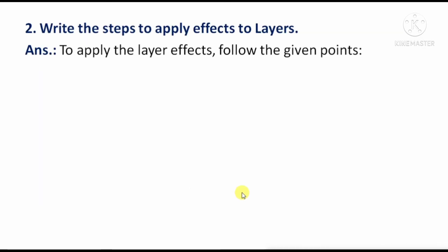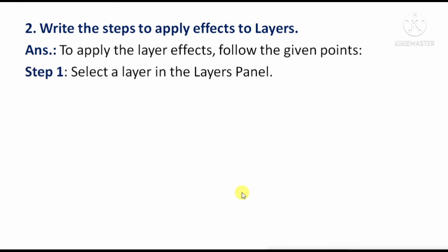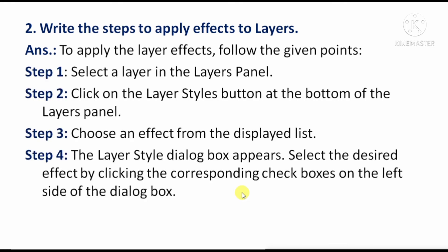Next: Write the steps to apply effects to a layer — means, write the steps to apply effects on layers. Select a layer, then click the Layer Style button. The Layer Style dialogue box will appear, and from there you can choose the options you want.